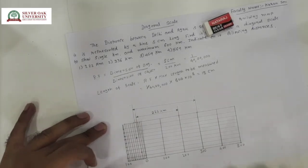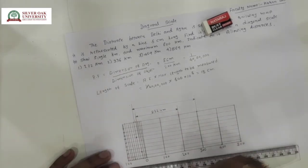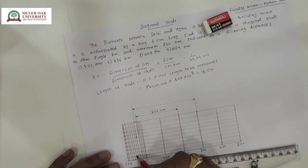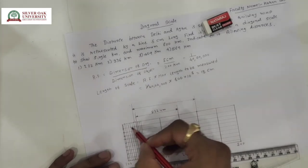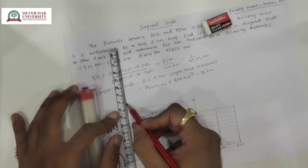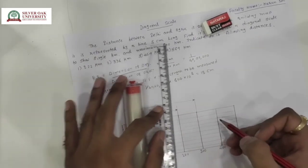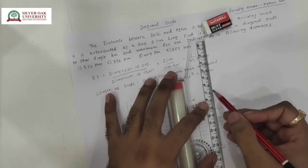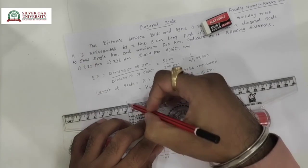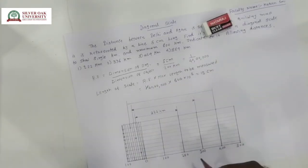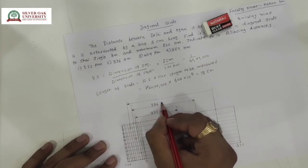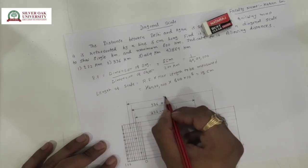Now the third answer is 459 km. This is 400, then 10, 20, 30, 40, 50, and then 9 divisions — so that is 459 km. This is the third answer. The second answer is 336 km and the third answer is 459 km.